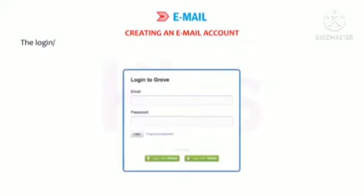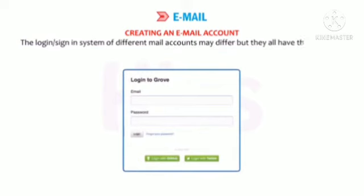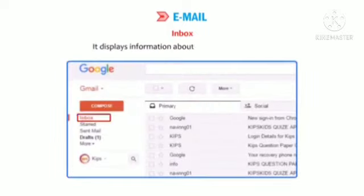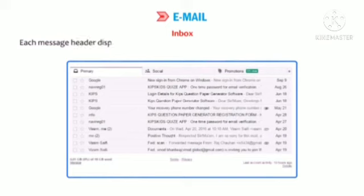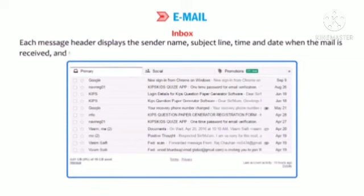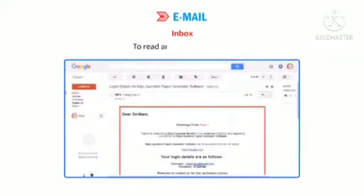The login or sign-in system of different mail accounts may differ but they all have identical features. Inbox displays information about all received mails. Each message header displays the sender name, subject line, time and date when the mail was received, and sometimes the size of the message too. To read an email, click on it; the mail will be displayed in a new window.